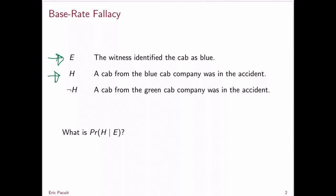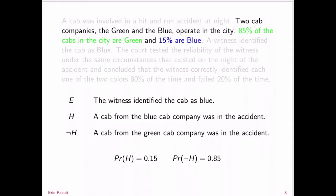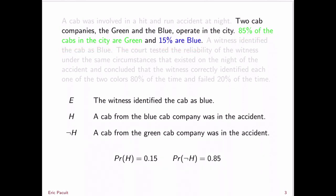So the question is, what is the probability of H given E? That is, what's the probability that it was a blue cab involved in the accident, given that the witness testified that it was a blue cab involved in the accident? Now we need to assign probabilities to our events. As we noted, 85% of the cabs in the city are green and 15% are blue. So that means the prior probability of H — that a cab from the blue cab company was involved in the accident — is 0.15, and the prior probability of not-H is, of course, 0.85.